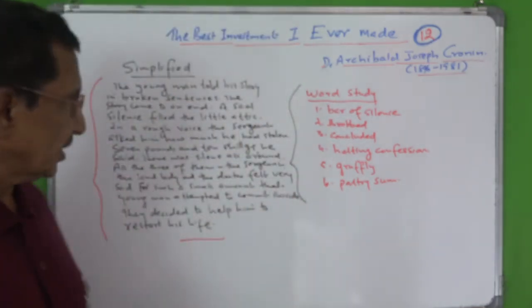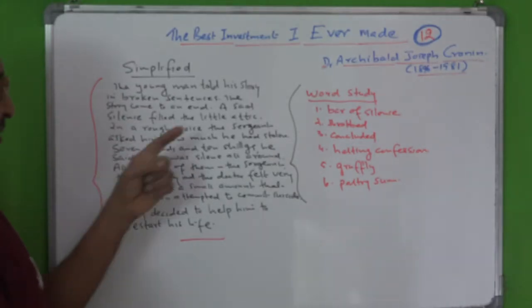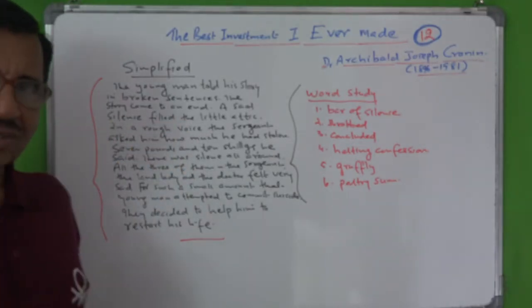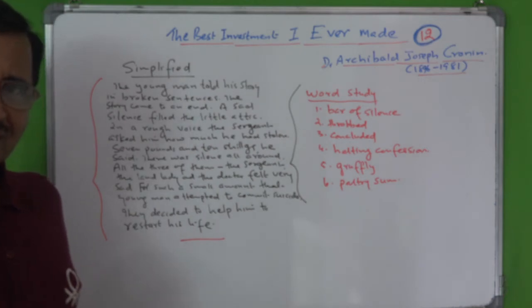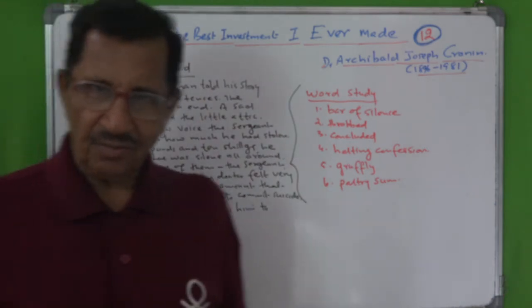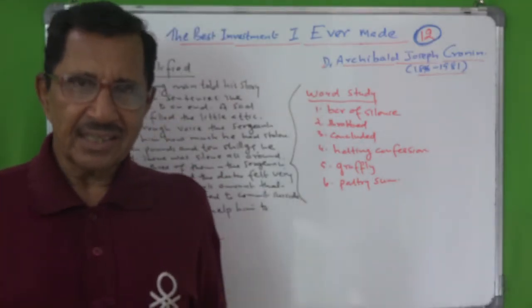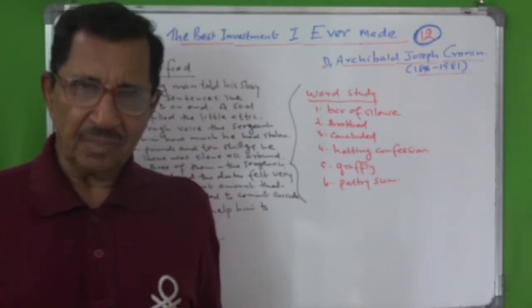Now the simplified version. The young man told his story in broken sentences. What was his story? Parents died. Then his uncle had a job in the solicitor's office. Fell into bad company. Victim of bad company. Easy money. More great pleasure. Betting. Gambling.